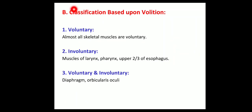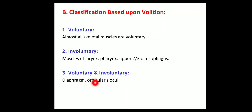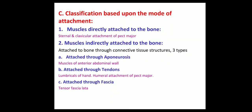The second classification of skeletal muscles is based upon volition. Number one: voluntary — almost all skeletal muscles are voluntary in nature. Number two: involuntary — muscles of the larynx, pharynx, and upper two-thirds of the esophagus are involuntary in nature. Number three: both voluntary and involuntary — for example, the diaphragm and orbicularis oculi.